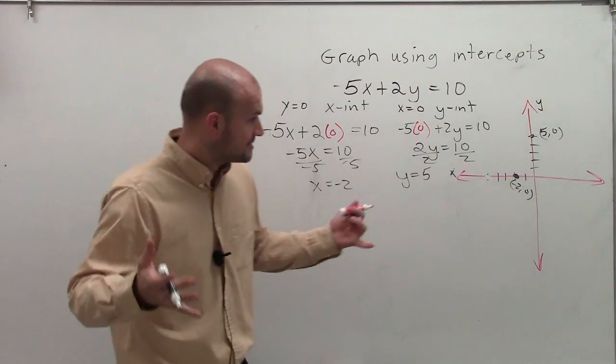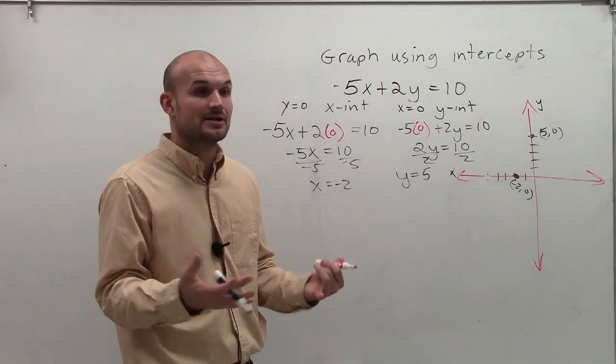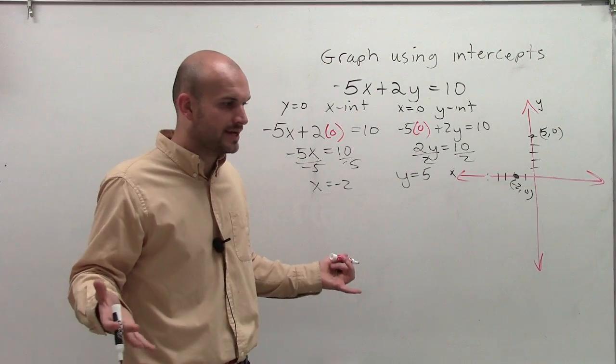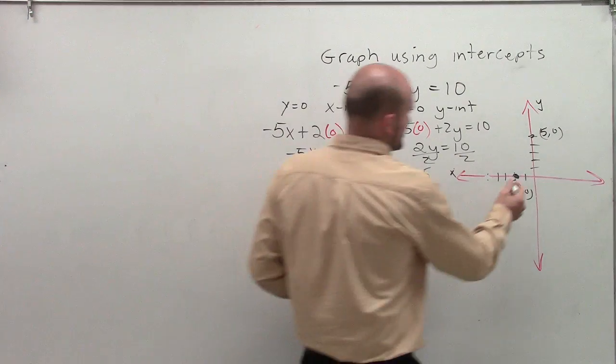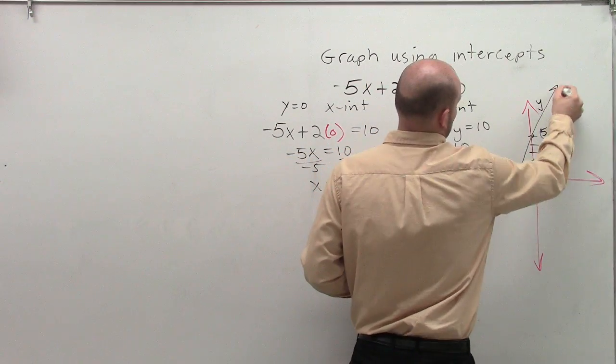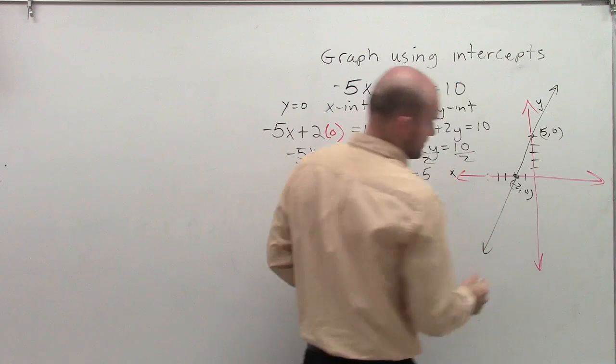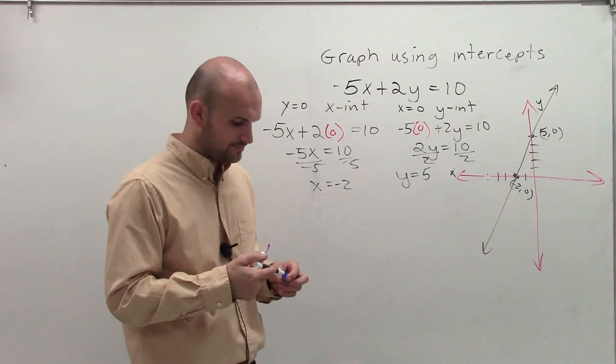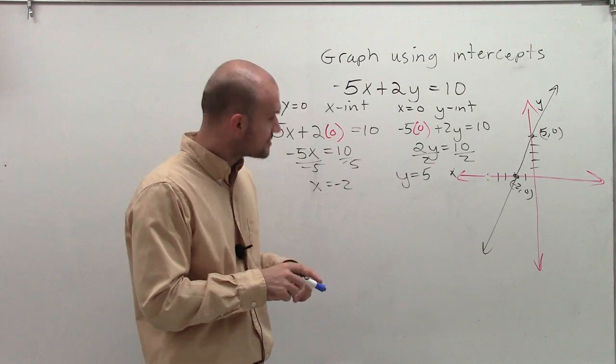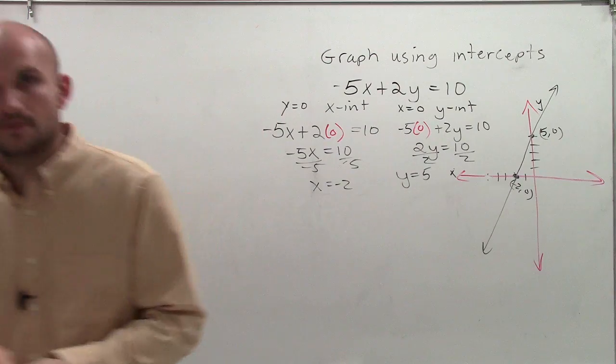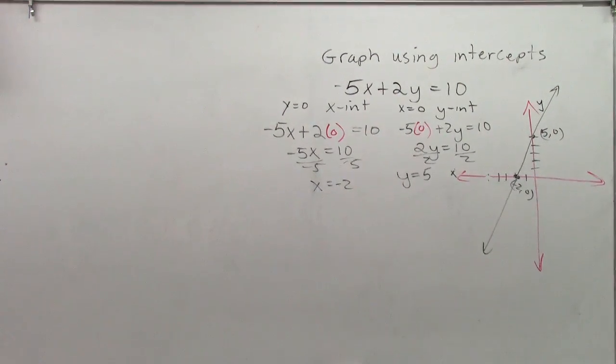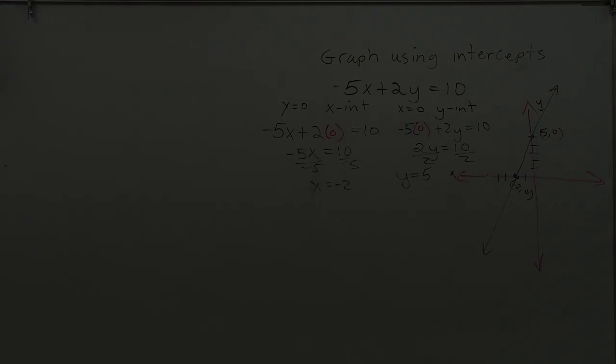So now that I know that I have an x and y-intercept, remember, to graph a line, all you need is two points. So just connect. And there you go. That's it. That's all you got to do. So that's how you graph using the intercepts.